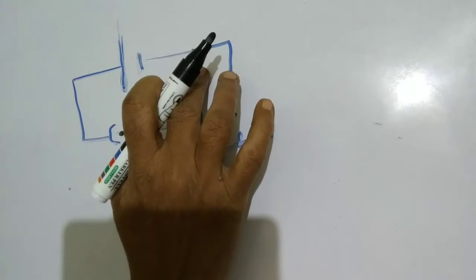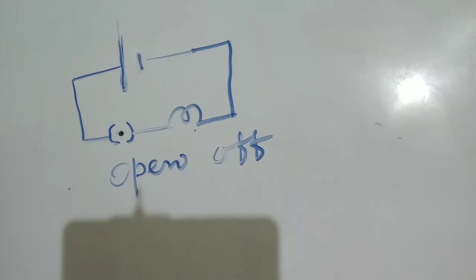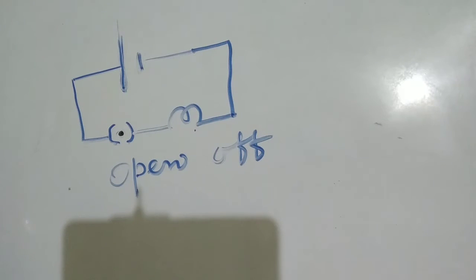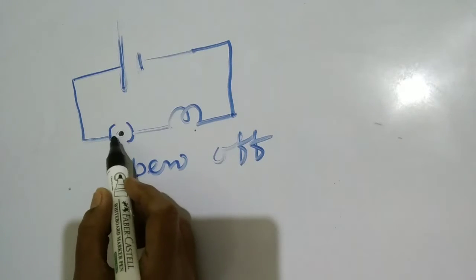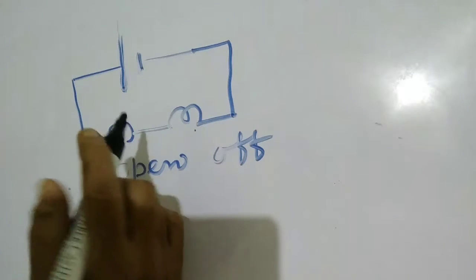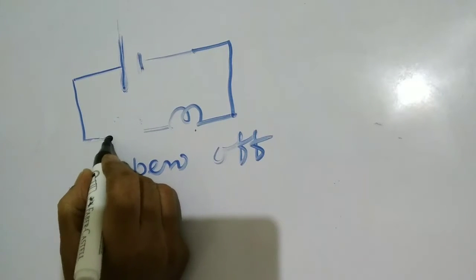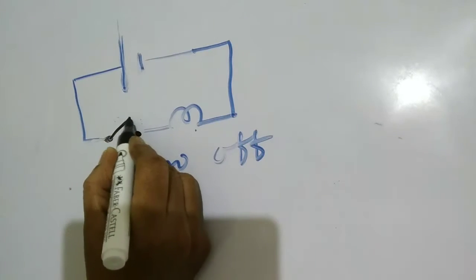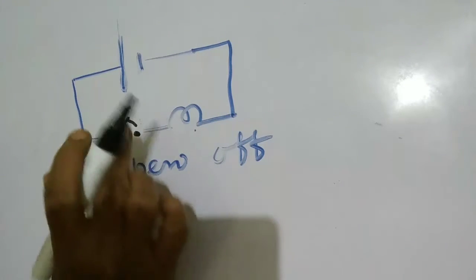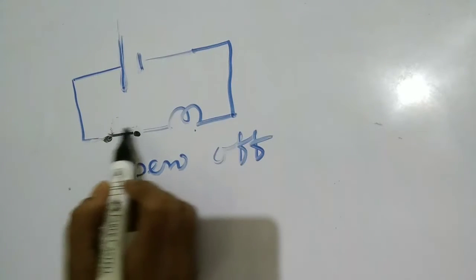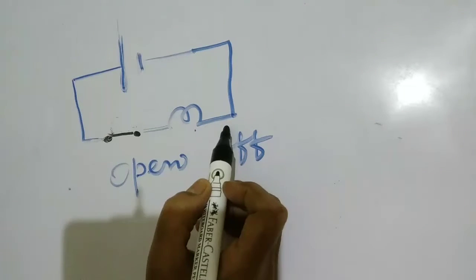If the circuit is completed only, the current flows through the circuit. If any break is there, no more flow of current is there — that is a broken circuit. Here it is a complete circuit and that is the on position. The switch can also be represented with this symbol. This is the open position, off position. And when it comes in touch here, the circuit is closed — the circuit is on. So this is the on and off position of the circuit.